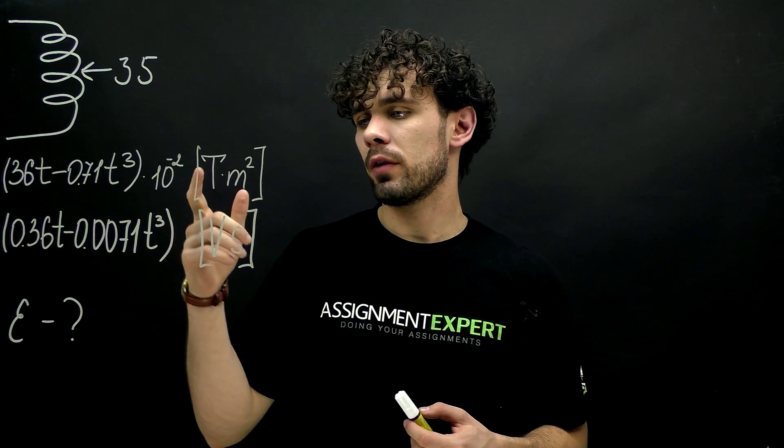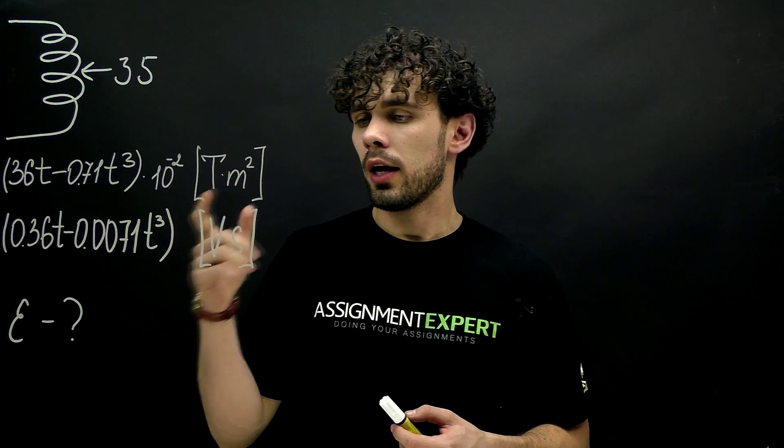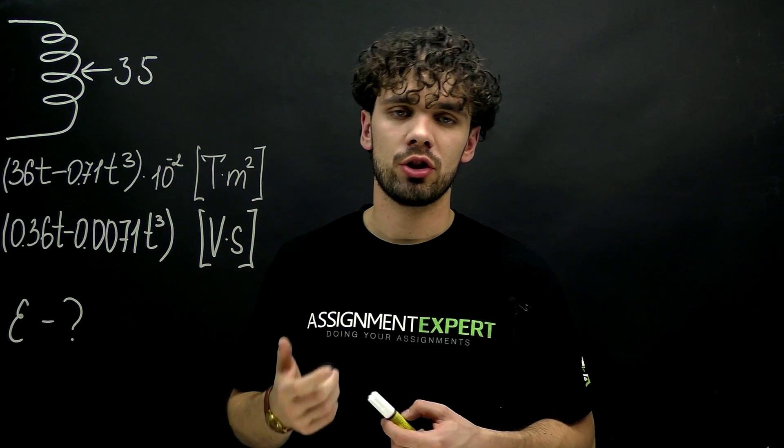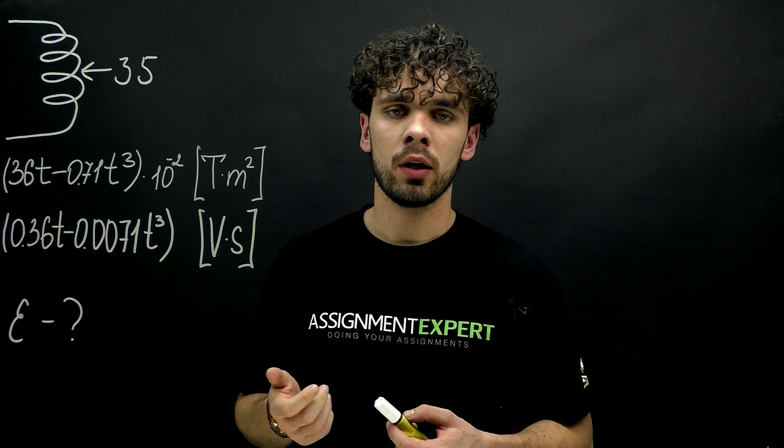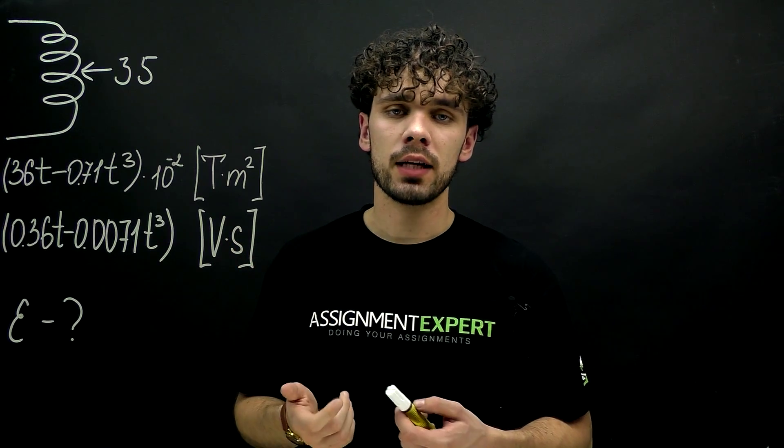We can right away get rid of 10 raised to the negative second power and get this expression, and the units are tesla times meter squared which is actually a Weber which can also be written as volt times second. Our task is to find induced EMF at fifth second.